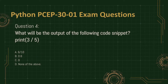Question 4. What will be the output of the following code snippet? Print three-fifths. A. Six-tenths. B. 0.6. C. 0. D. None of the above.